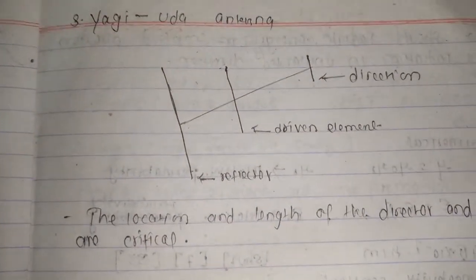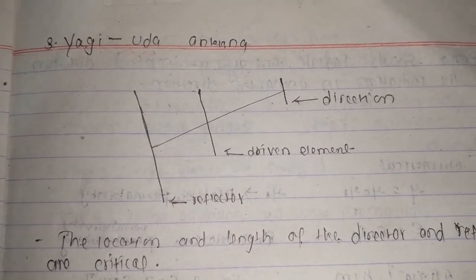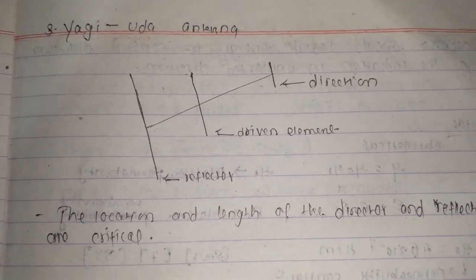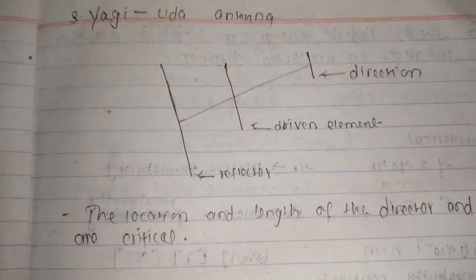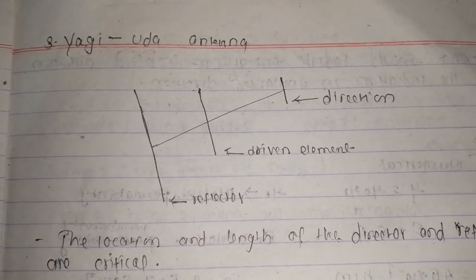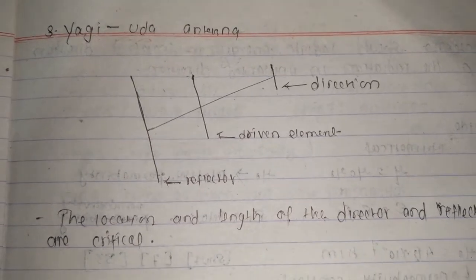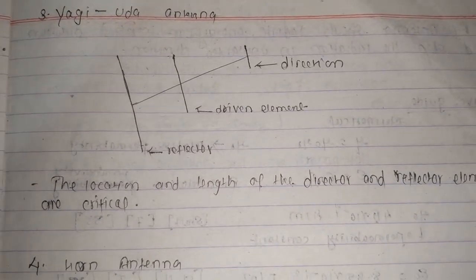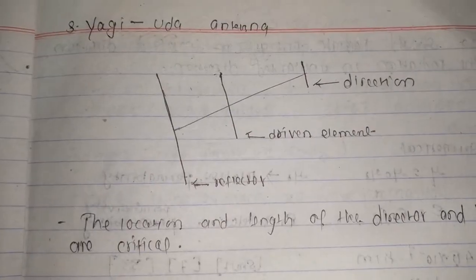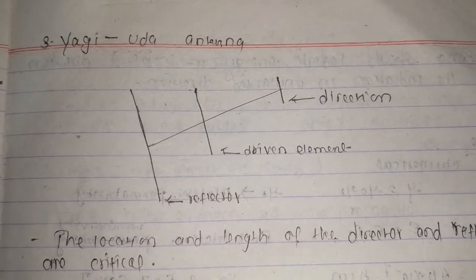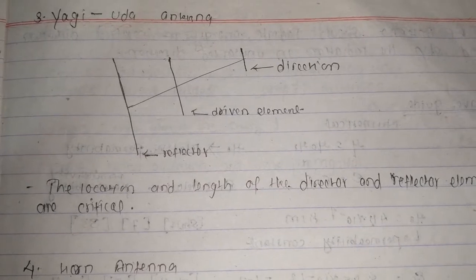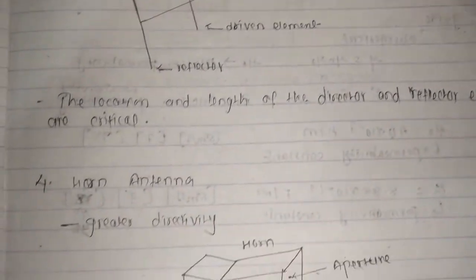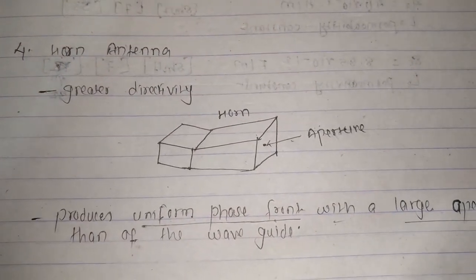Third one is Yagi-Uda antenna. Everyone saw about it. Yagi-Uda has three parameters: director, reflector, and driving element. The location and length of the director and reflector elements are critical - that means length and position are critical. And then fourth one is horn antenna.